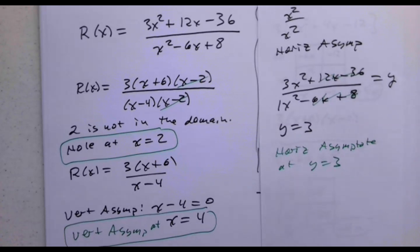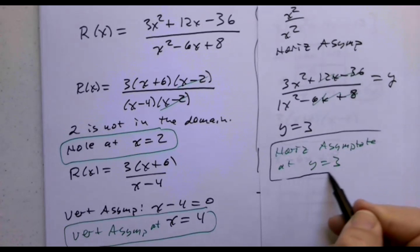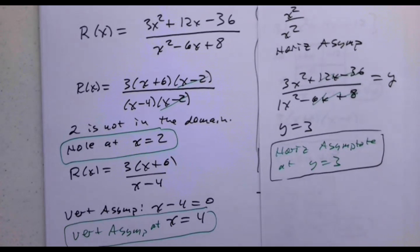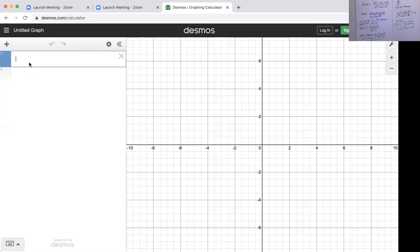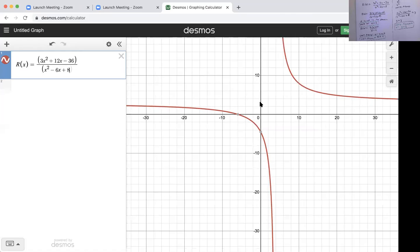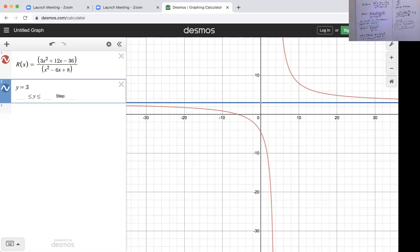Now can we check this on the graphing calculator? I'll go ahead and plug it in on Desmos to get a little bit more resolution. Going to Desmos, we have R of x equals 3x squared plus 12x minus 36 divided by x squared minus 6x plus 8. I believe I have a horizontal asymptote at y equals 3. Do you believe that from looking at the picture? y equals 3. Seems reasonable.